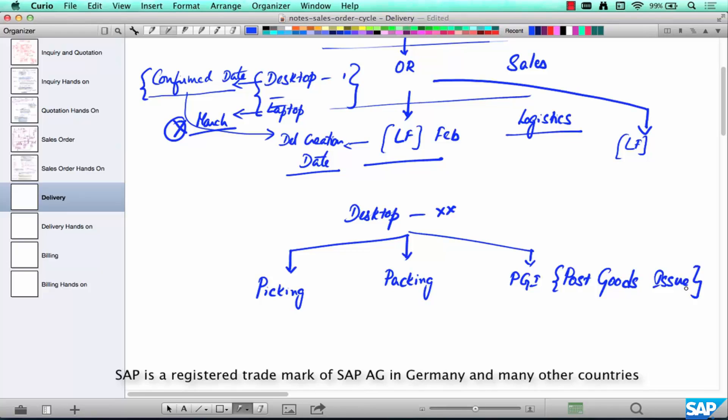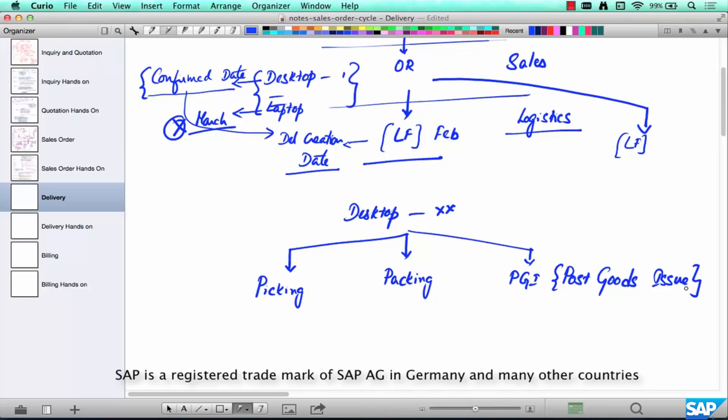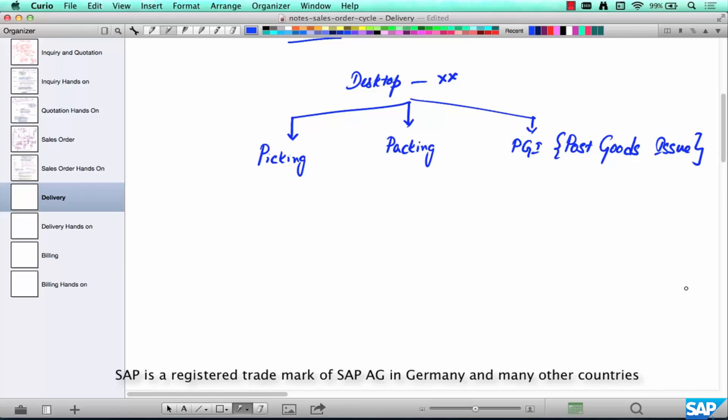There are three pieces to a delivery. There are other areas that we are not going to explore at this point, but these are the main three key pieces in a delivery or three key sub-processes in a delivery. Picking, Packing, PGI. I am just going to give you a brief overview here.